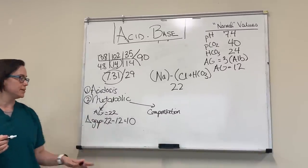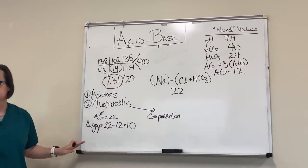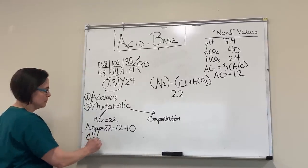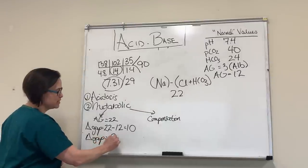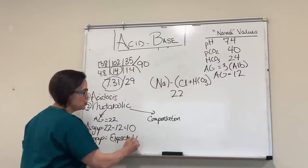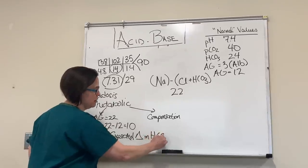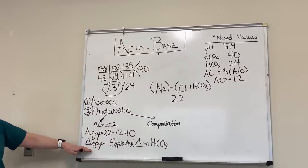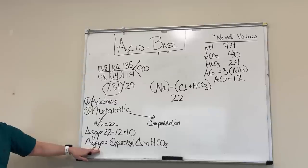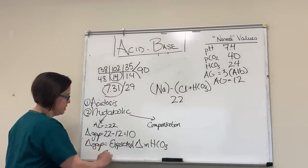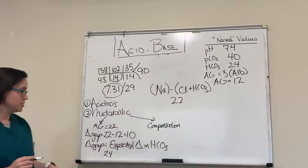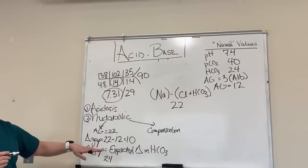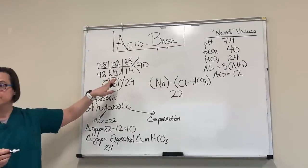One sentence I say to myself every time: my delta gap equals my expected change in my bicarb. A normal bicarb is 24. My expected change is 10, so my expected bicarb would be 14 — which is exactly what it is. That tells us we have an anion gap metabolic acidosis and no other metabolic disorder.